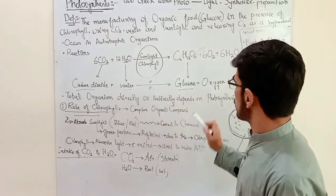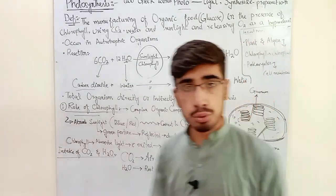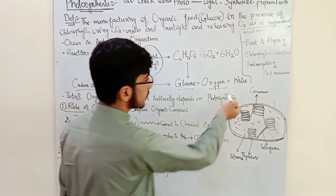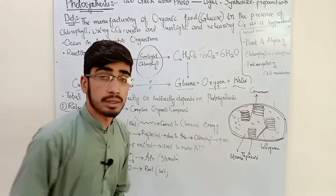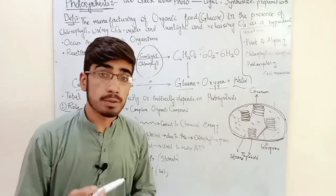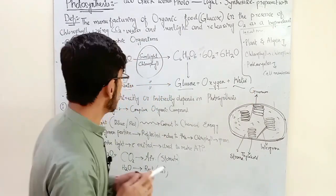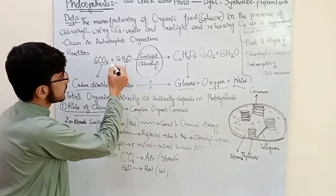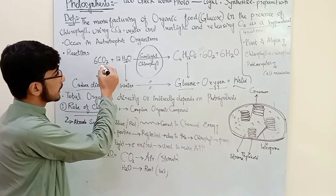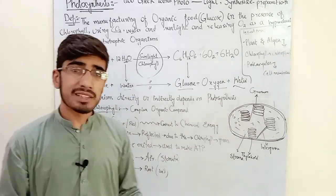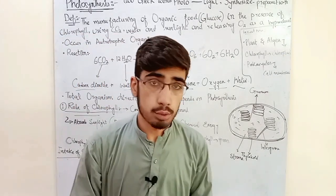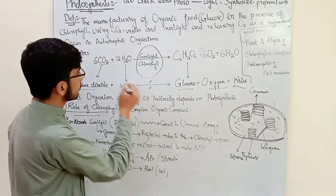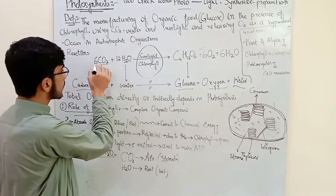If we use carbon dioxide, H2O (water), sunlight, and chlorophyll, the products are glucose and oxygen released as a by-product. Water is also released. The carbon in glucose comes from carbon dioxide.